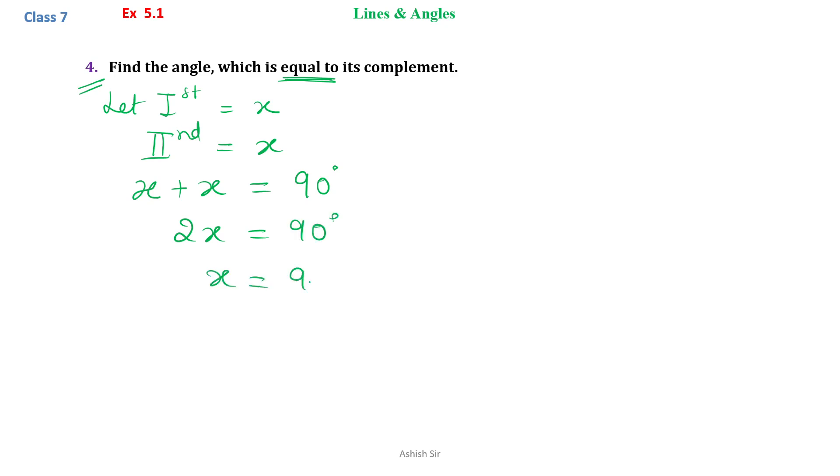So, x will be equal to 90 divided by 2. When we cancel it with 2, we get 45. So, x will be equal to 45 degrees.